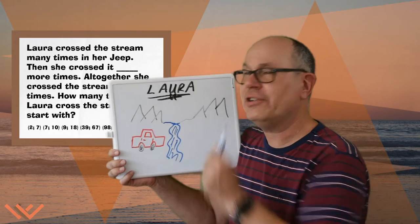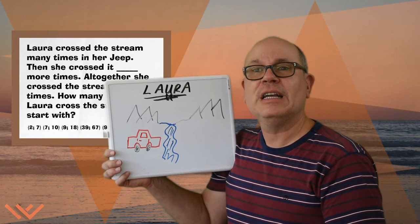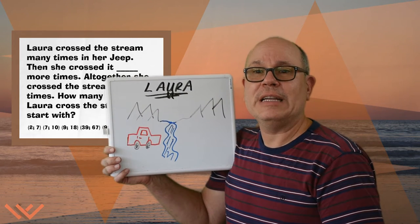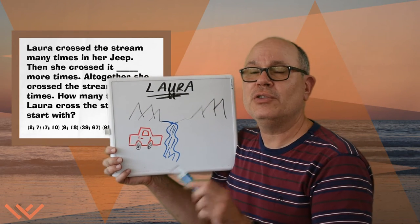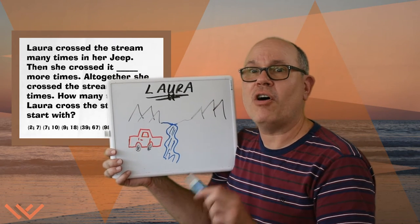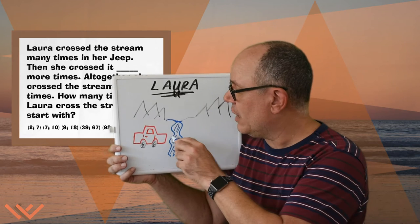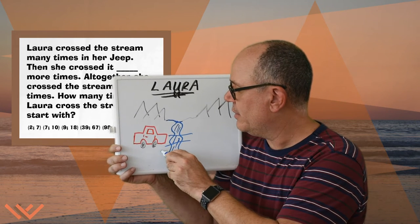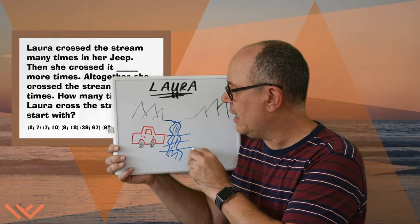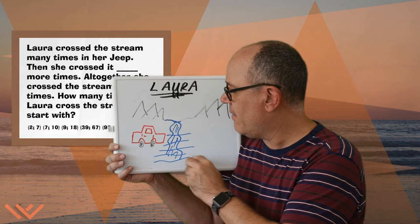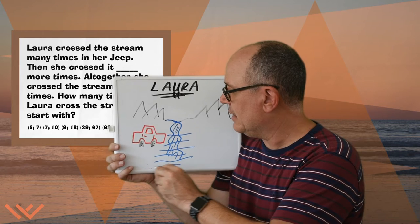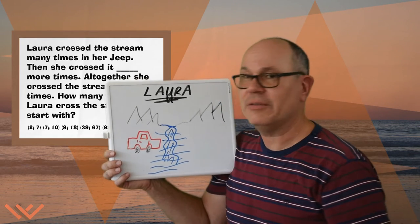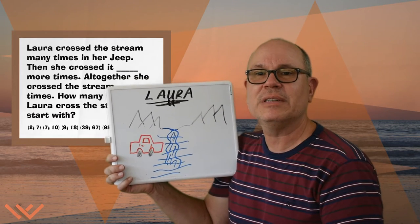Here's Laura in her Jeep. She crossed a stream two times. All together she crossed once, twice, three times, four times, five times, six times, seven times. So she went across seven times.